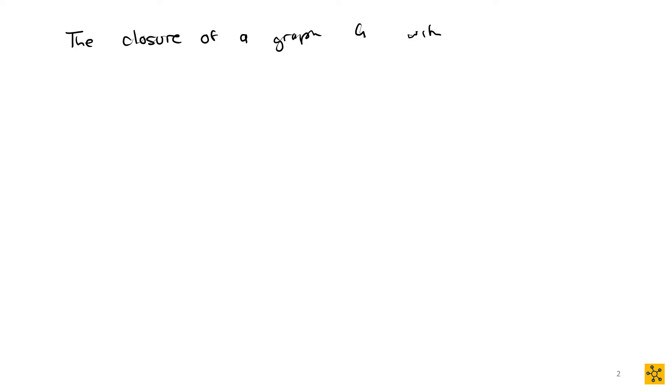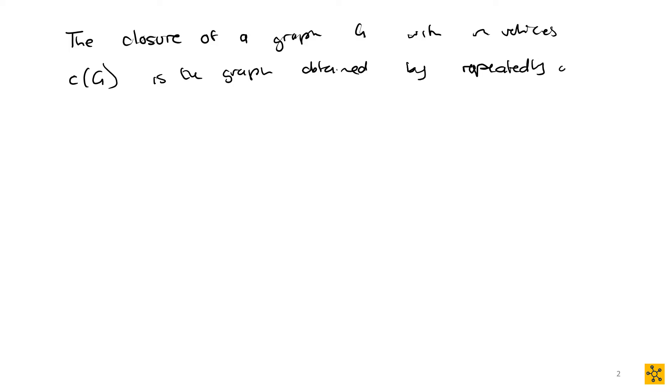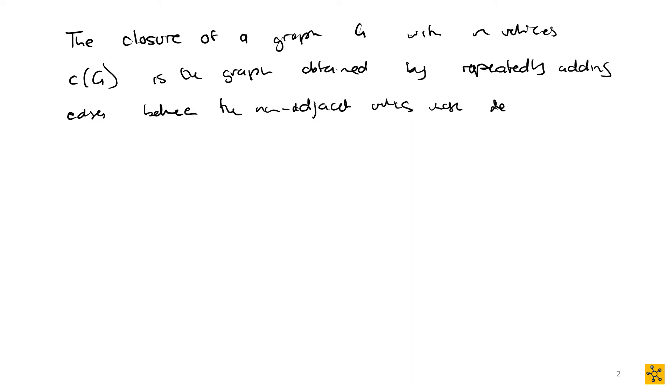We're looking at the closure of the graph. In our notes we discuss how it's defined recursively — we look at the degrees of the non-adjacent vertices, and if the sum of the degrees is greater than or equal to n, we add an edge. So the closure of a graph G with n vertices, denoted C(G), is the graph obtained by repeatedly adding edges between non-adjacent vertices whose degrees sum up to at least n.